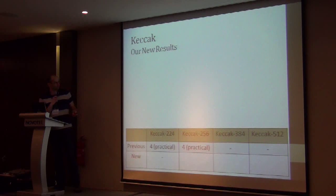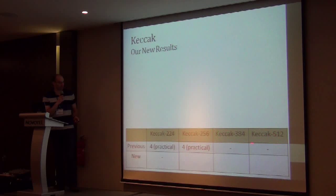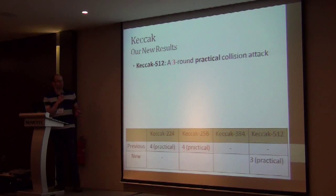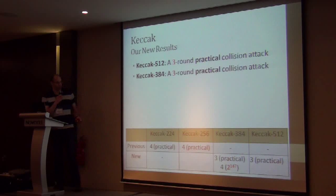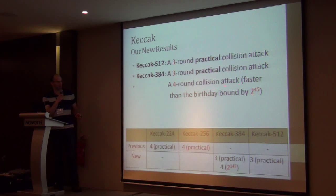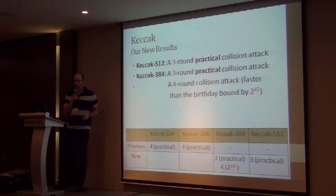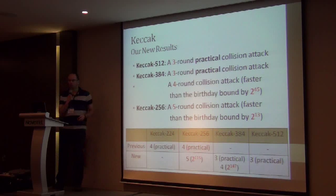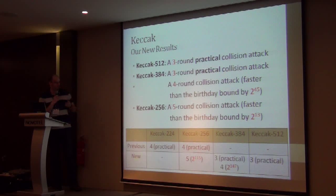In this work we present the first three-round practical collision attack on Keccak-512. For Keccak-384 we also have a three-round practical collision attack. For four rounds of Keccak-384 we have a collision attack faster than the birthday bound by a factor of 2 to the 45. And for Keccak-256, we have a five-round collision attack faster than the birthday bound by a factor of 2 to the 13, increasing the number of attackable rounds from 4 to 5.